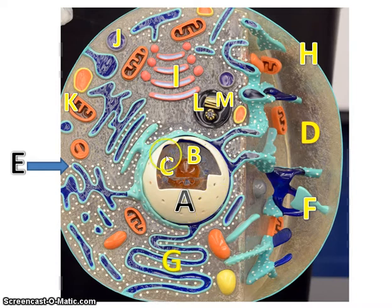Nucleus, nucleolus, chromosomes, cytoplasm, ribosomes, smooth endoplasmic reticulum, rough endoplasmic reticulum, cell or plasma membrane, Golgi apparatus, lysosome, mitochondria, centrosome, and centrioles. One more time...